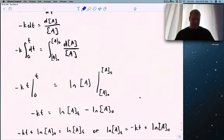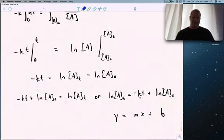If you know your calculus, the integral of dt is t from 0 to t. The integral of dx over x is natural log of x. So we get natural log of A from A₀ to some time t. Applying the limits, minus kt equals natural log of At minus natural log of A₀.